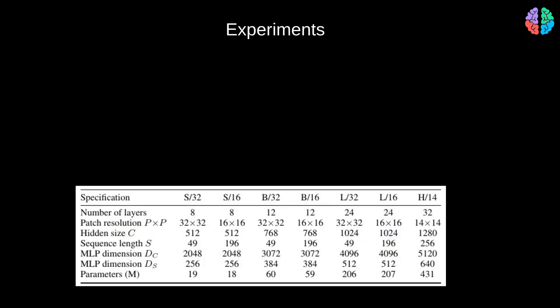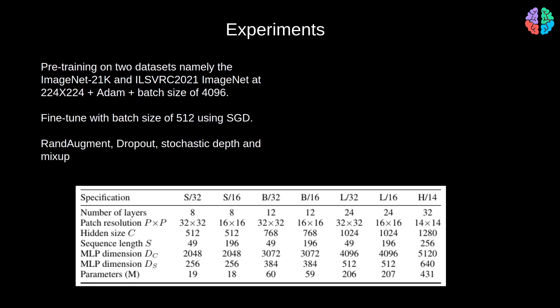For the experiment, they first do pre-training on two datasets, namely the ImageNet 21K and ILSVRC 2012 ImageNet, using the standard Adam optimizer with a batch size of 4096.